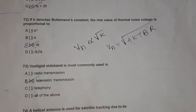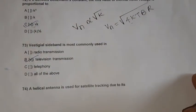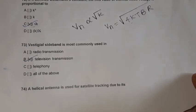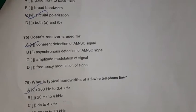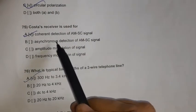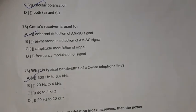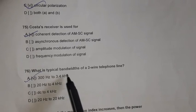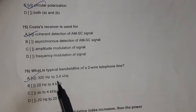Question 73: Vestigial sideband is most commonly used in television transmission. Question 74 (75): A helical antenna is used for satellite tracking due to its circular polarization. Question 75 (75/76): The COSTAS receiver is used for coherent detection of AM-AC signals. Question 76: The typical bandwidth of a two-wire telephone line is 300 Hz to 3.4 kilohertz.